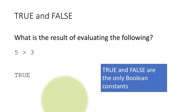True and false are the only Boolean constants. Unlike integers where you've got many constants — 0, 1, 2, 3, 4, 5, minus 1, minus 2, minus 3 — there are many many constants in integers. Whereas with Booleans there are only two possibilities: either true or false.